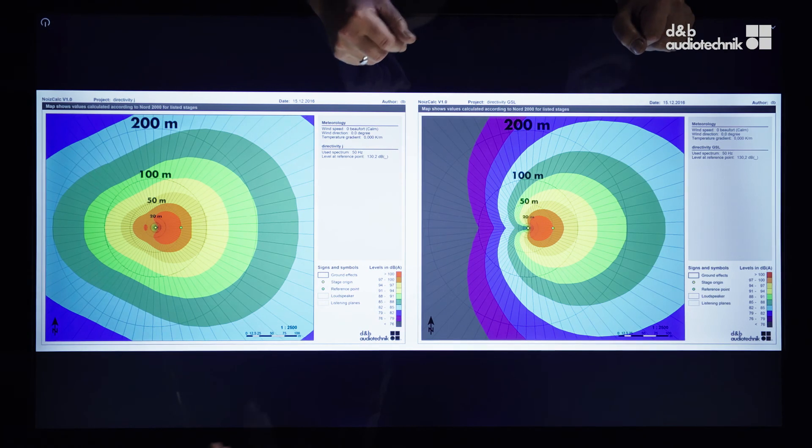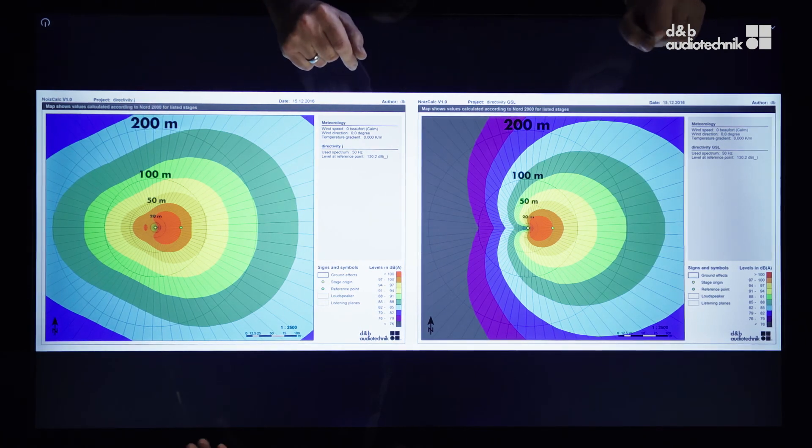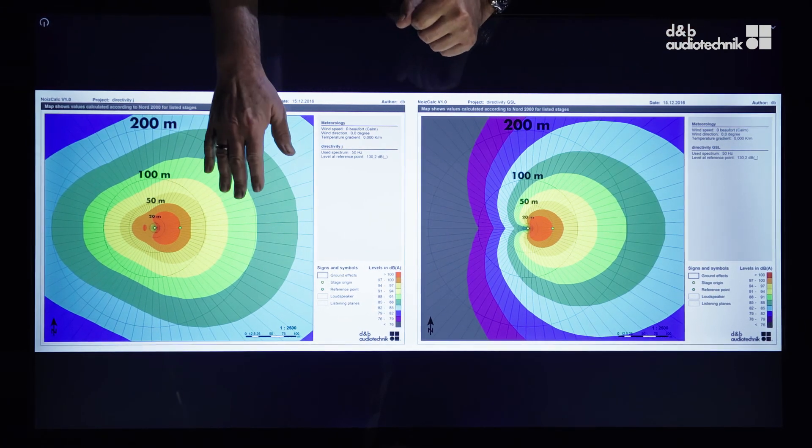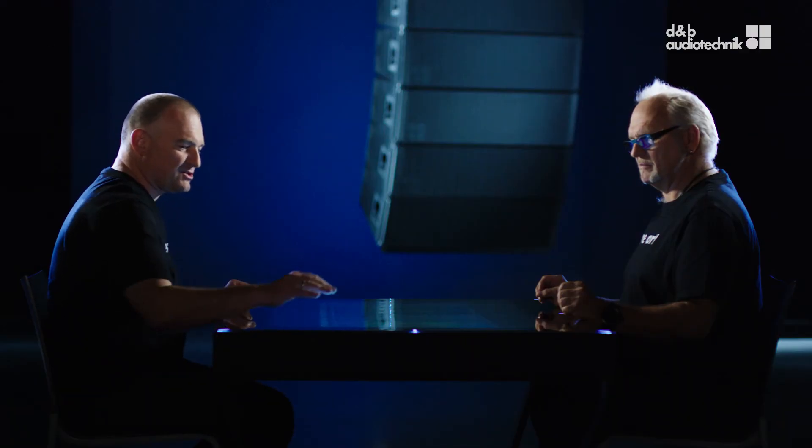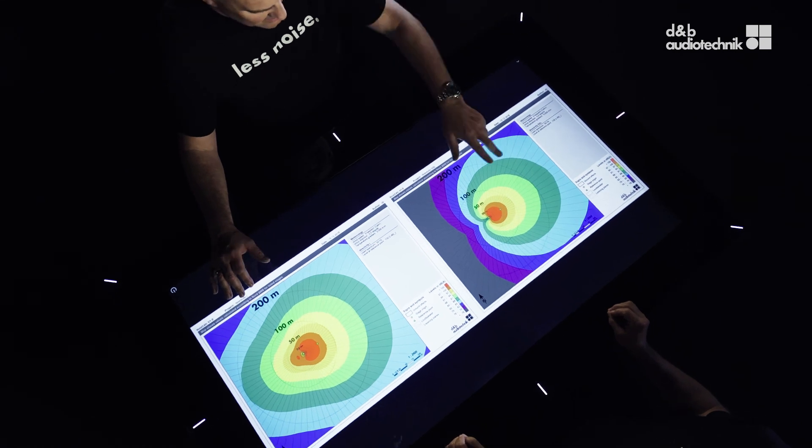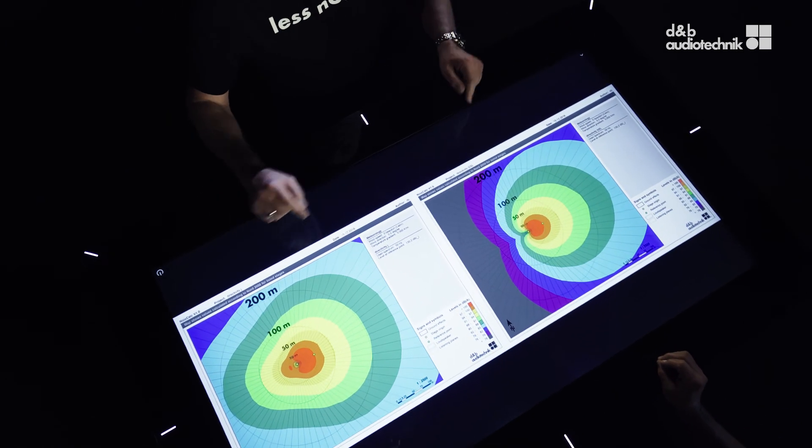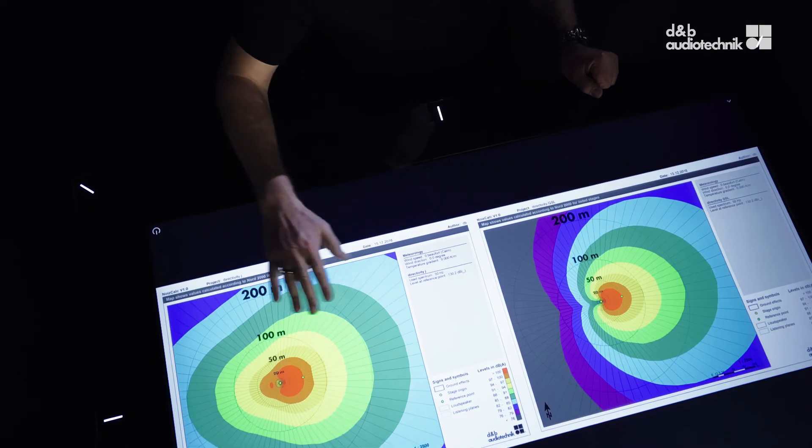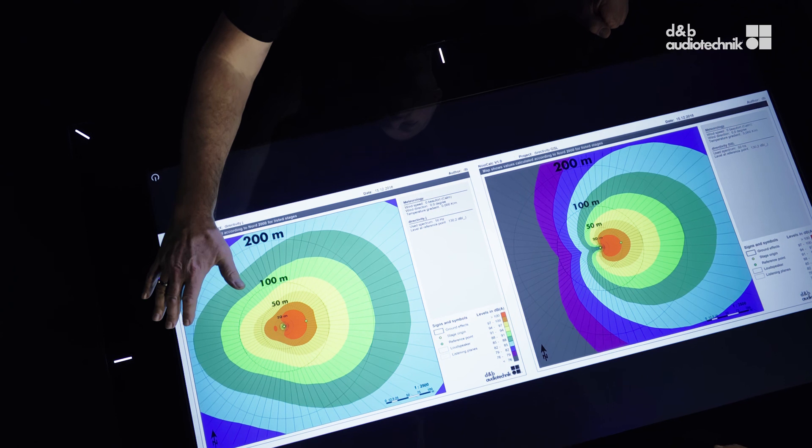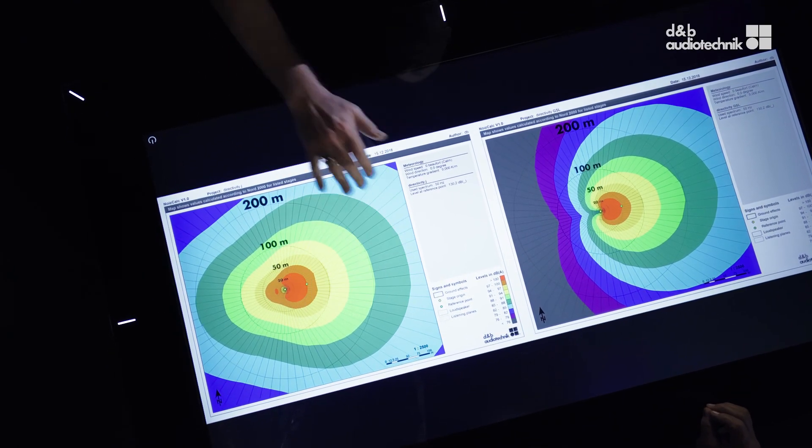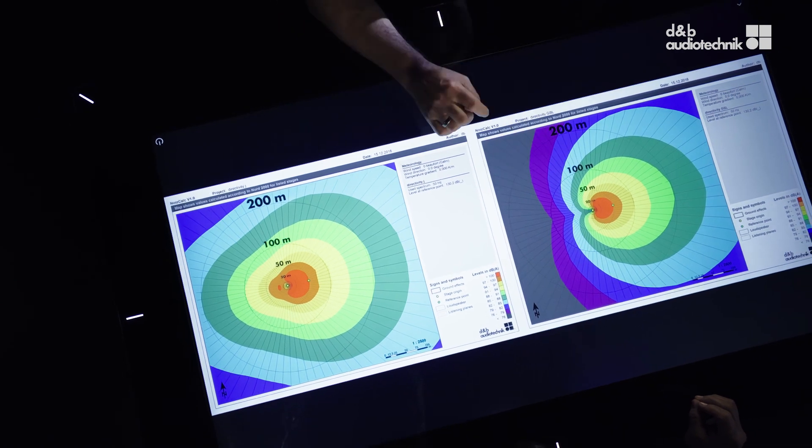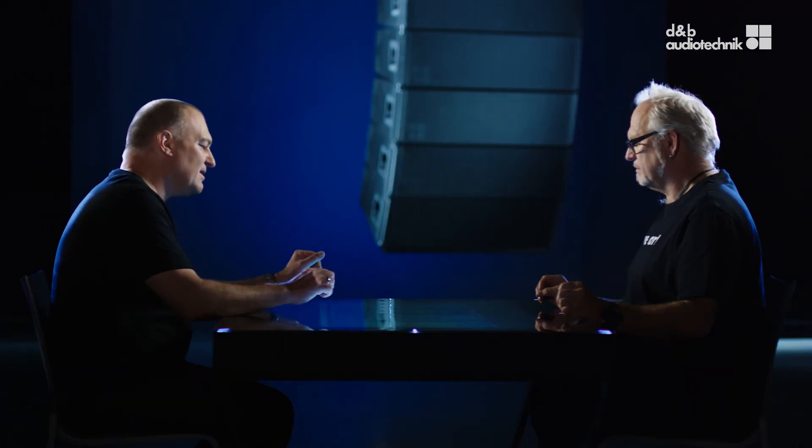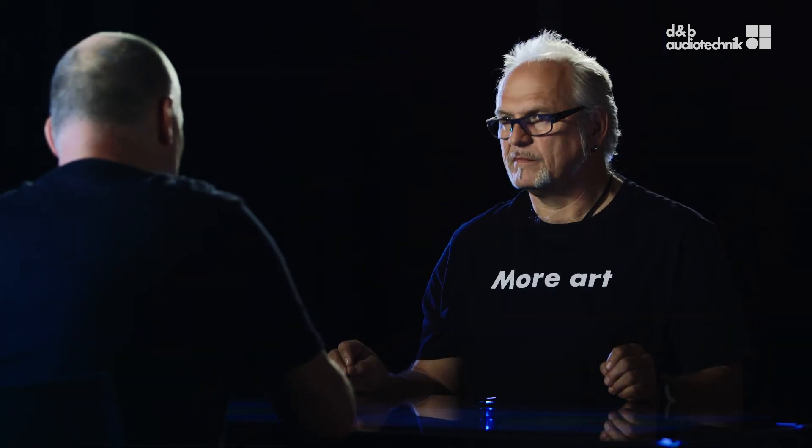This is taken from the noise crank simulation software where we can actually simulate emission. This is a slice in the low frequency range showing a comparison between a J series array and a GSL array with the same reference level at the reference point. In the low frequency range we have basically no rejection to the rear, identical emission all around, while with the new system we have a similar high level towards the audience area and a massive rejection to the rear.